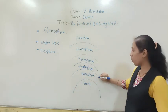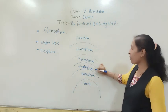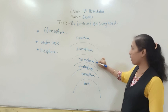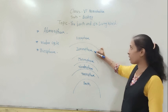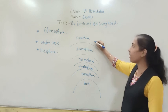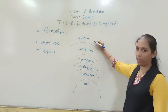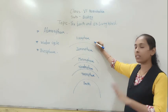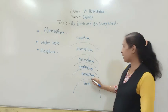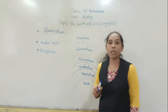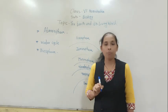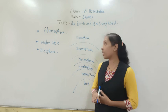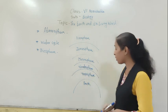The names of the layers are: Troposphere, Stratosphere, Mesosphere, Ionosphere, and Exosphere. Like that, five layers are present in the atmosphere. So let's discuss one by one what these layers of the atmosphere are.